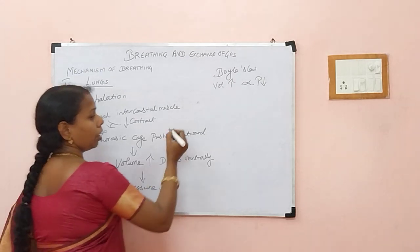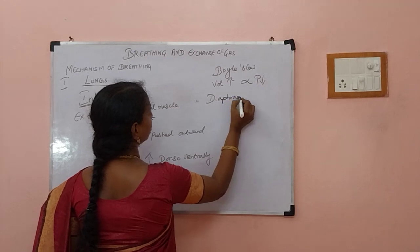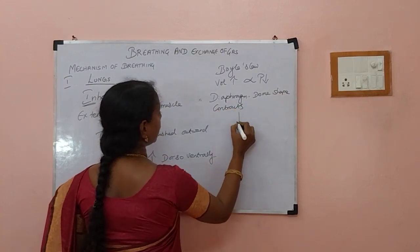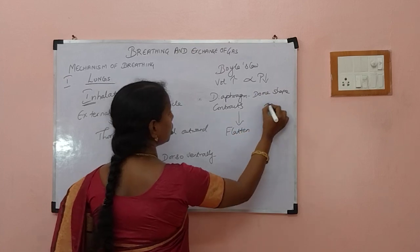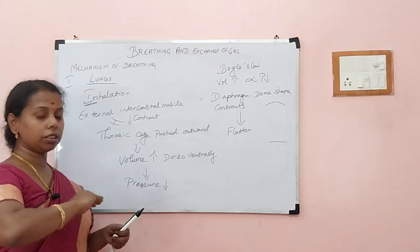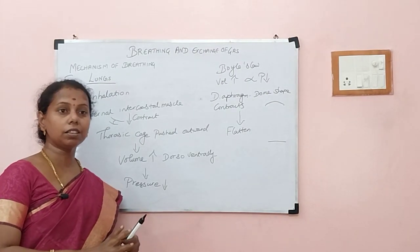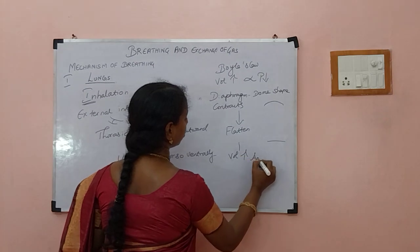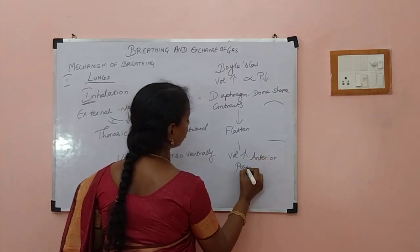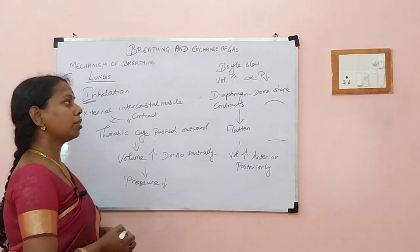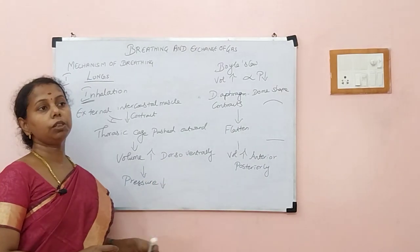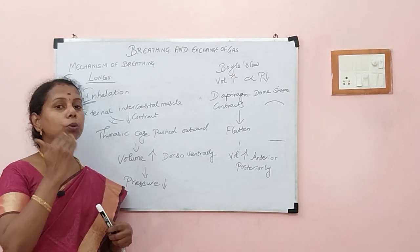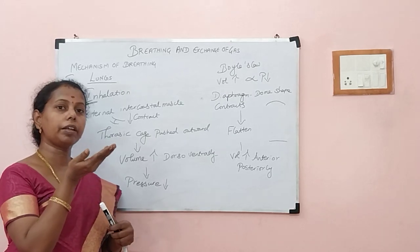Now what happens to the diaphragm? The dome-shaped diaphragm contracts and attains a flattened shape. The dome-shaped diaphragm goes down and flattens. As a result, volume increases anterior-posteriorly. As you know, whenever volume increases, pressure inside the lungs decreases compared to the atmosphere, so air rushes in from the atmosphere.